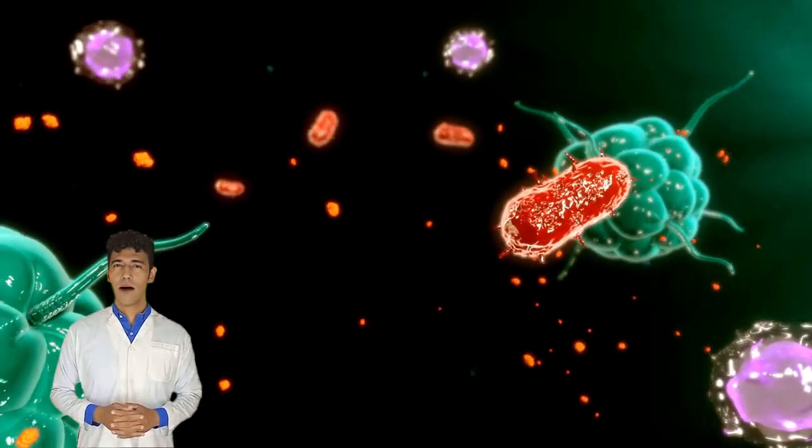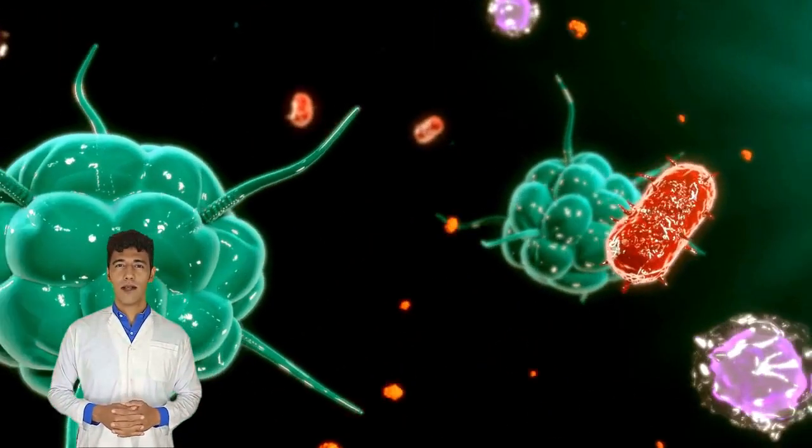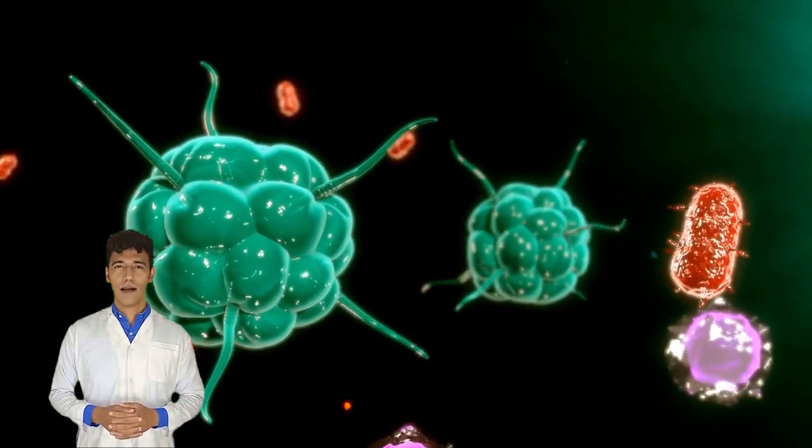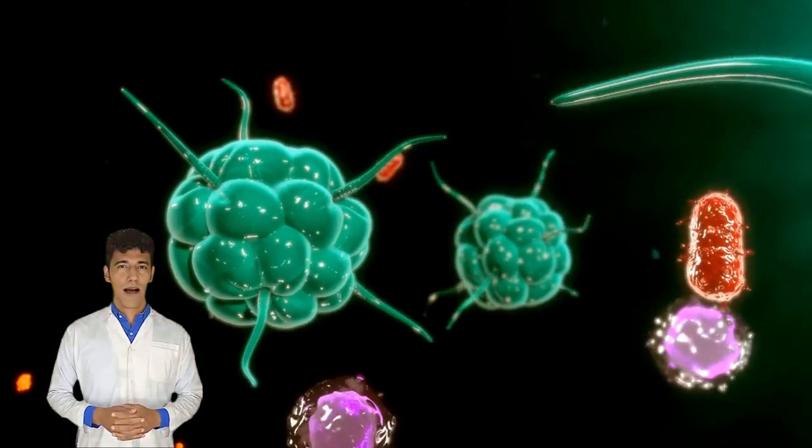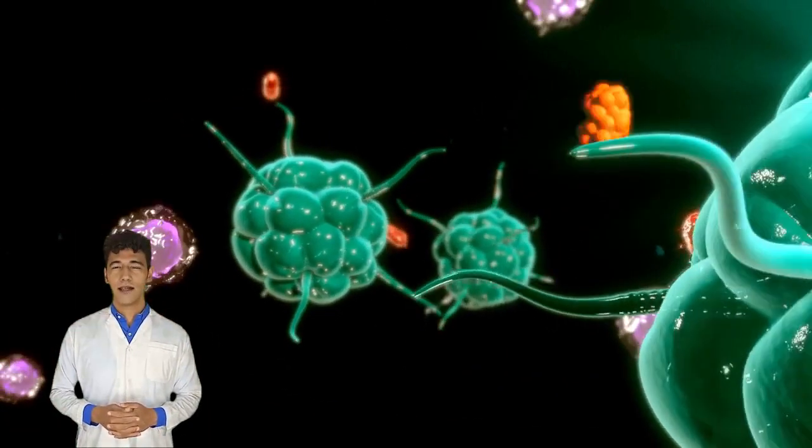Now let's dive into the specifics of how vaccines work. When a vaccine is administered, the antigens in the vaccine stimulate our immune system to produce specific proteins called antibodies. These antibodies then attach themselves to the antigens and neutralize them, preventing them from causing disease.